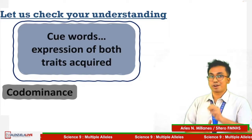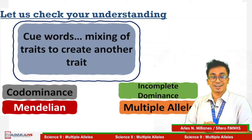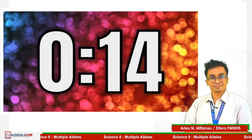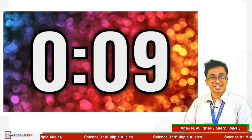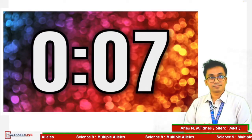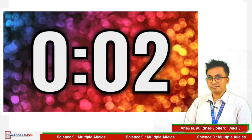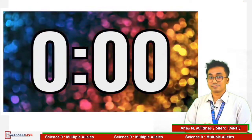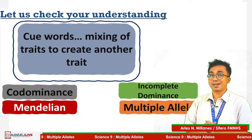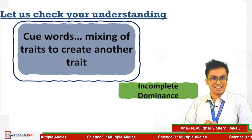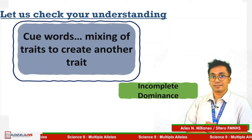For question number 4, our clue is this one. 10 seconds — 5 seconds — time up. If you chose incomplete dominance, I bet you will get a perfect score on your quizzes in this topic.